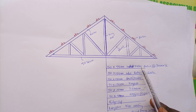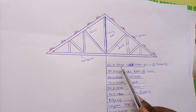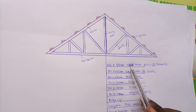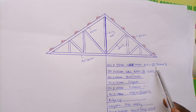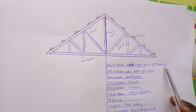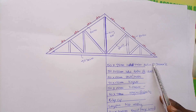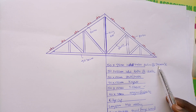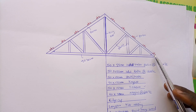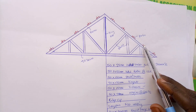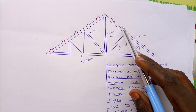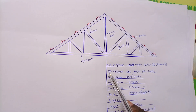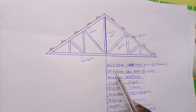The specification states 50 by 75mm hardwood timber purlin at 900mm center to center. This means the spacing of each purlin is 900mm — from this purlin to the next is 900mm, then 900mm again. So the distance between each purlin will be 900mm. That is what this simply indicates.